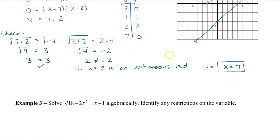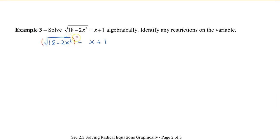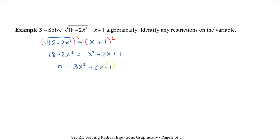The last example is to solve this equation algebraically. I have the radical isolated on the left side, so I'm going to square both sides. When I do that, I get 18 minus 2x on the left squared, equals x plus 1 squared on the right, which expands to x squared plus 2x plus 1. Moving everything to the right side to keep a positive x squared, I get 0 equals 3x squared plus 2x minus 17.